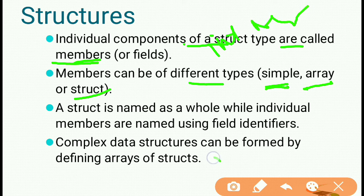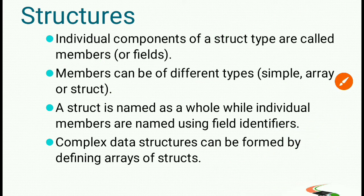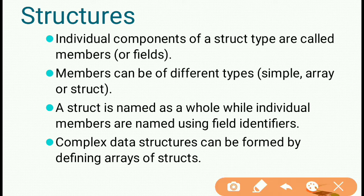For example, char name[15] is an array member. If a structure has this as one of its members, that is one member that is an array. A structure is named as a whole, while individual members are named using field identifiers.